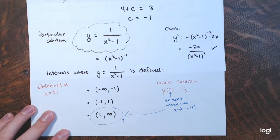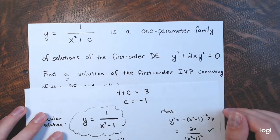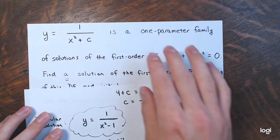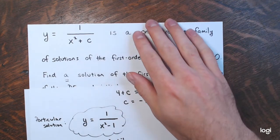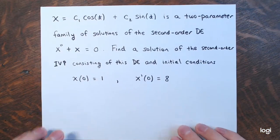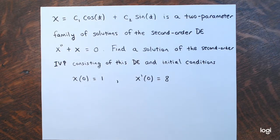So that was an example with a one-parameter family, where I found one constant. In the last example, I'm going to look at a two-parameter family, so there are two unknown constants, and there should therefore be two initial conditions to help find what those two constants are.